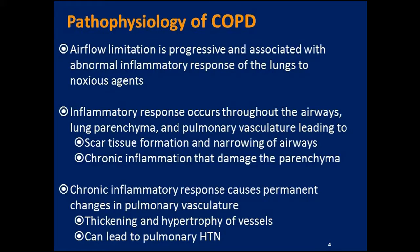This happens over years — 10, 15, 20 years of chronic inflammation and chronic airflow limitation. As those airways change and develop more scar tissue, the vessels will hypertrophy and eventually lead to pulmonary hypertension. It changes the vasculature inside the lungs, making them very stiff and rigid, which leads to increased pulmonary pressures or pulmonary hypertension.